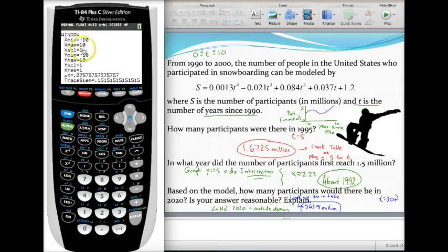Let's adjust our window first to begin working on this problem. As I just said, the x min x max let's adjust those to 0 which represents 1990 and 10 which represents 2000. It says that's the only part that this equation makes sense for.